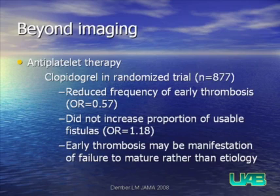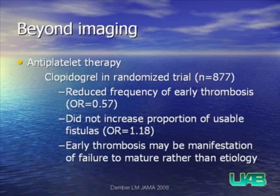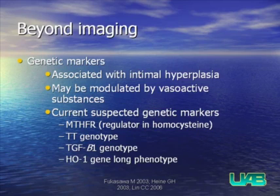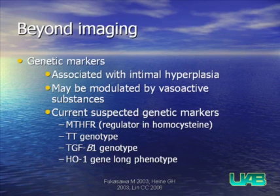Clinicians have tried antiplatelet therapy to prevent thrombosis. In a randomized trial of 877 patients, there was reduced frequency of early thrombosis with antiplatelet therapy. However, even though the thrombosis rate decreased, the proportion of usable fistulas did not significantly change — again supporting the idea that early thrombosis may be a manifestation of failure rather than an underlying etiology. Looking further, we should consider potential genetic markers for hyperplasia to help predict which patients may have worse outcomes.